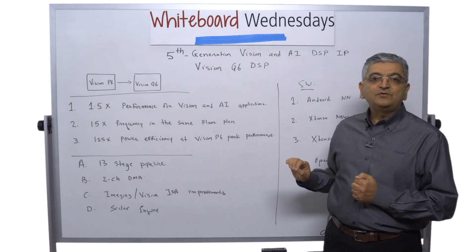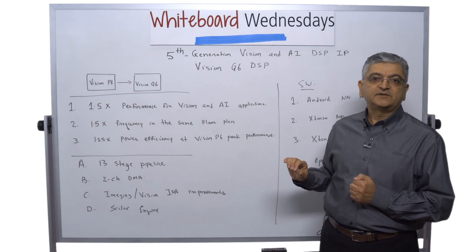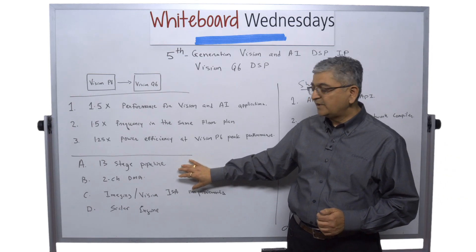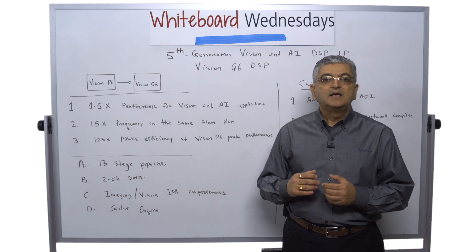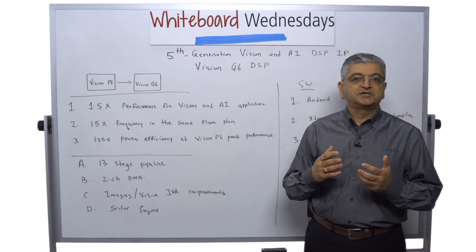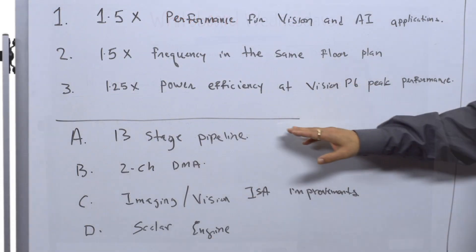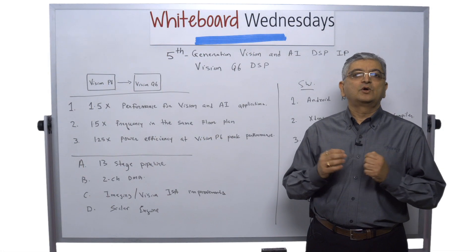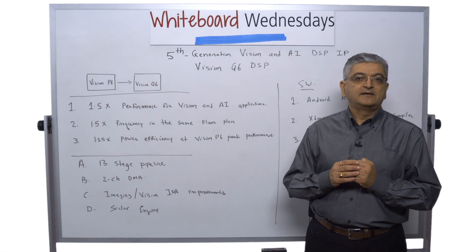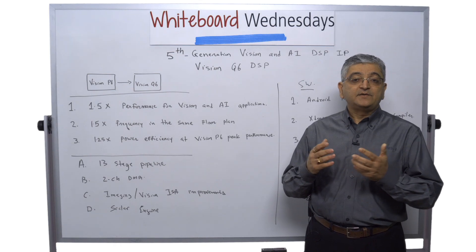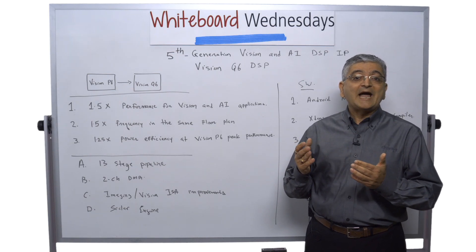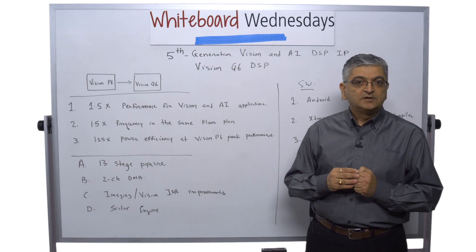Now, how do we bring this performance improvement? We are bringing this performance improvement by doing a few things. Number one, we are going to our next generation newer pipeline, which is a 13-stage deep pipeline. When you go to a 13-stage deep pipeline, if you are taking a lot of branches, then you will end up paying branch penalty. So, we have very sophisticated branch prediction.